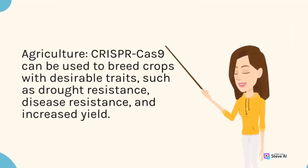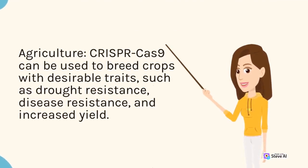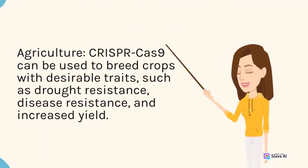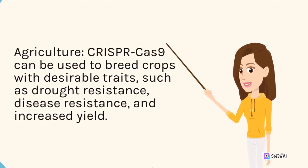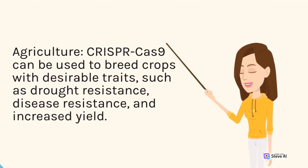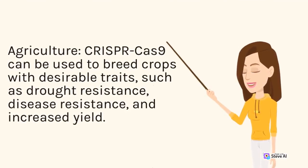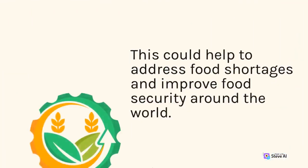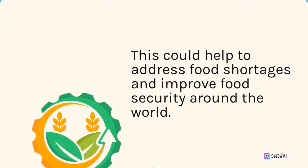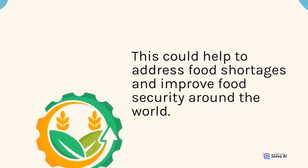In agriculture, CRISPR-Cas9 can be used to breed crops with desirable traits, such as drought resistance, disease resistance, and increased yield. This could help to address food shortages and improve food security around the world.